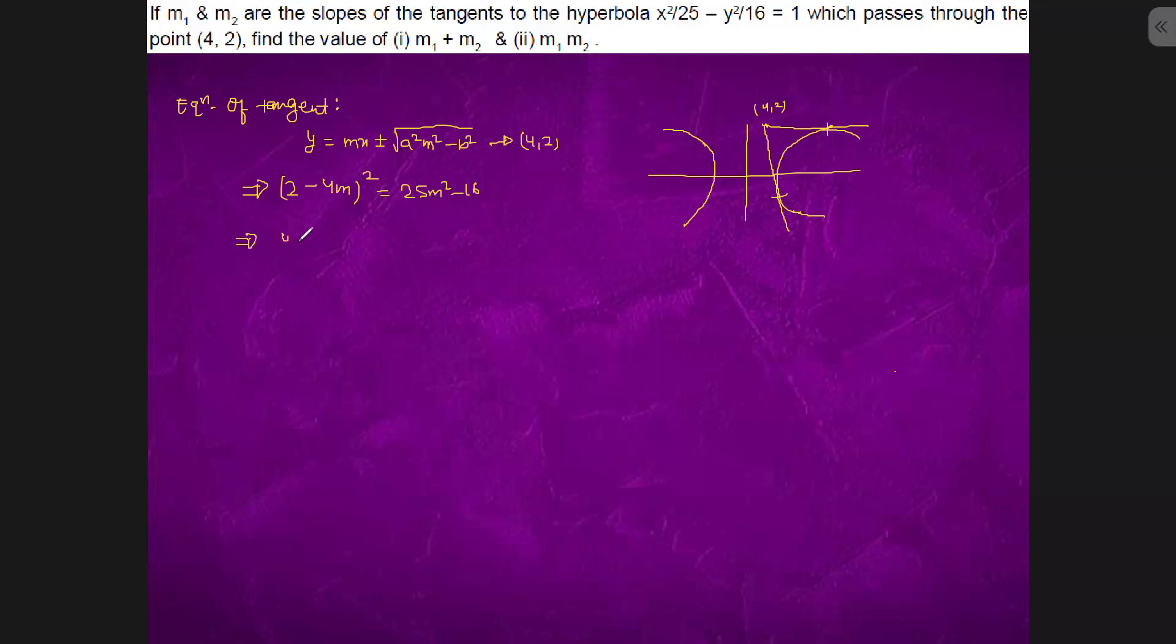This is what: four plus sixteen m square minus sixteen m equals to twenty five m square minus sixteen.